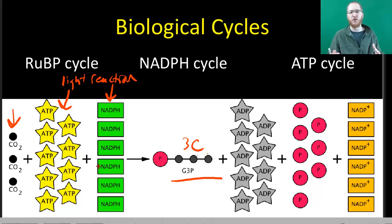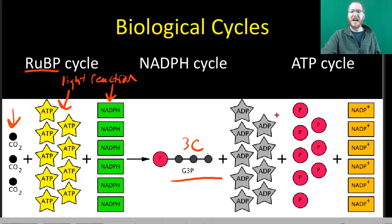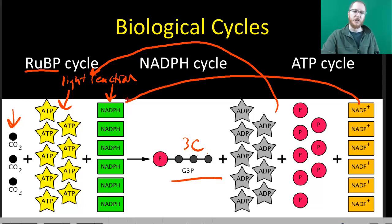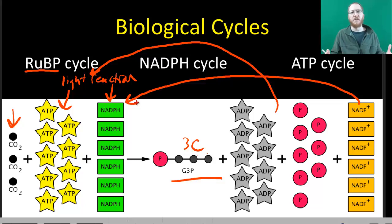There are lots of cycles going on. We've already talked about RuBP being recycled, so that continues in a cycle. The ATP is broken down to ADP and an inorganic phosphate, and these will be rebuilt during the light reactions to become ATP again. Just like NADPH is broken down into NADP+, which — after we split water giving us H+ and electrons — can also be rebuilt into NADPH by the light reactions. So most of what we're doing in photosynthesis is really part of a cycle — whether it's a building and destroying ATP cycle, an NADPH cycle, or a RuBP cycle.